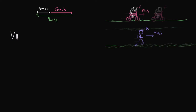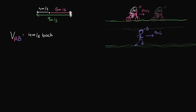We write this as V of A — A for Akash — as seen by Bolt, written as VAB. The second letter represents with respect to whom we are calculating the velocity of the first person. Now, since velocity depends on direction, let's use sign convention. Let's choose the right side as positive. Then velocity of A is positive, velocity of B is positive, but VAB — the velocity of A with respect to B — is negative because Bolt sees Akash going backwards. So this is minus four meters per second.